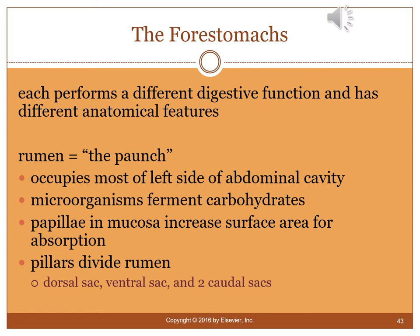The rumen occupies most of the left side of the abdominal cavity. It contains microorganisms for fermentation of carbohydrates, and papillae in the mucosa increase surface area for absorption. Pillars divide the rumen into dorsal, ventral, and two caudal sacs.